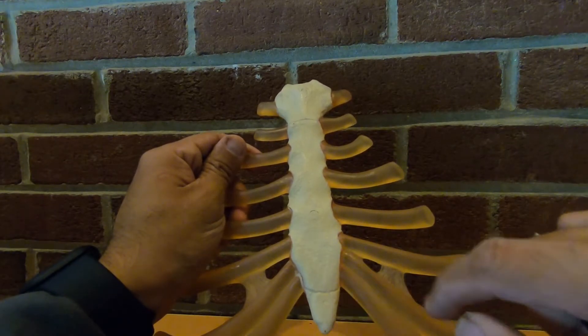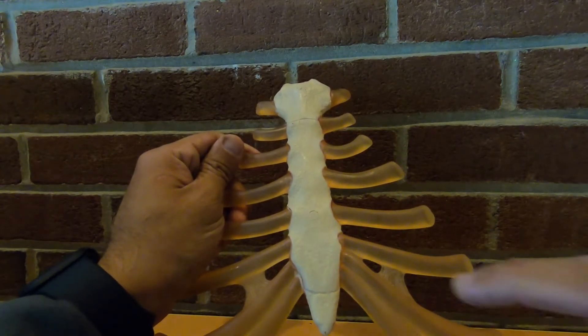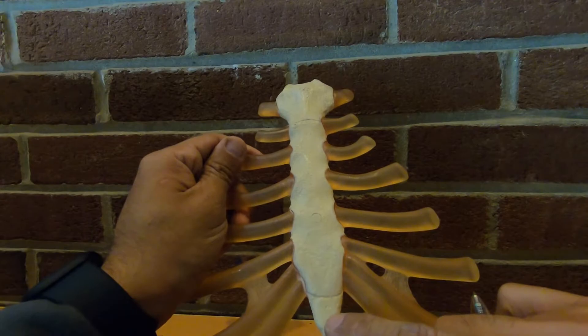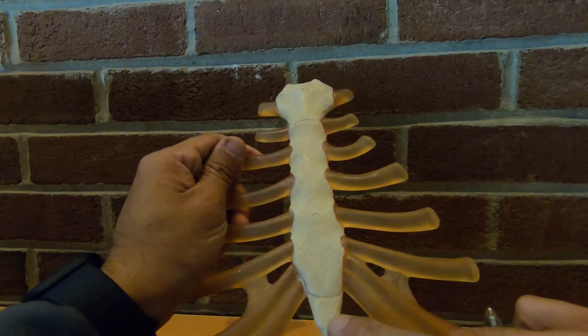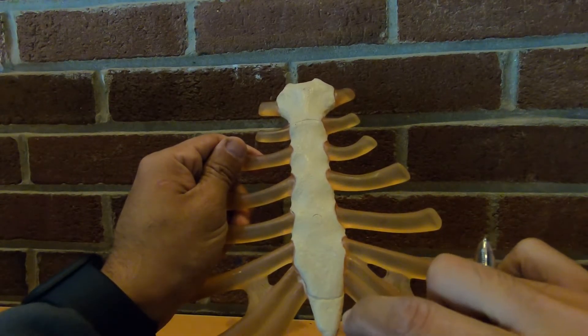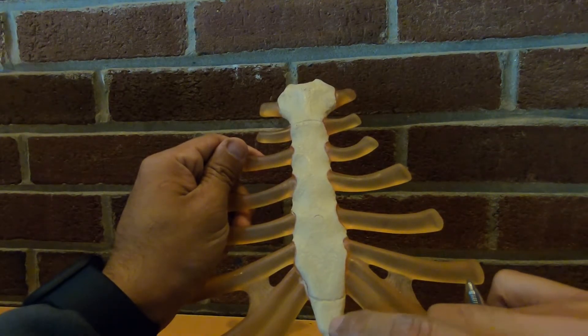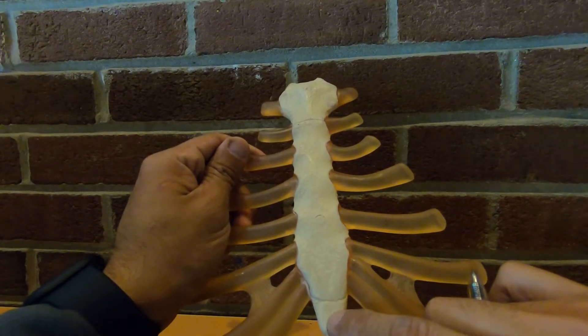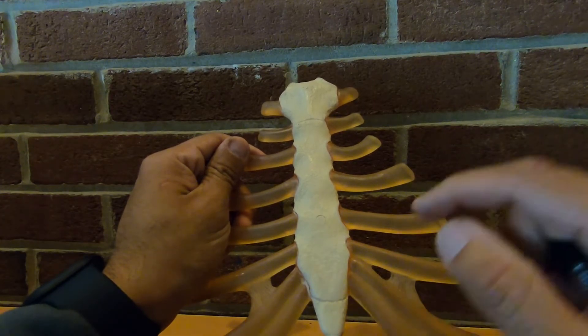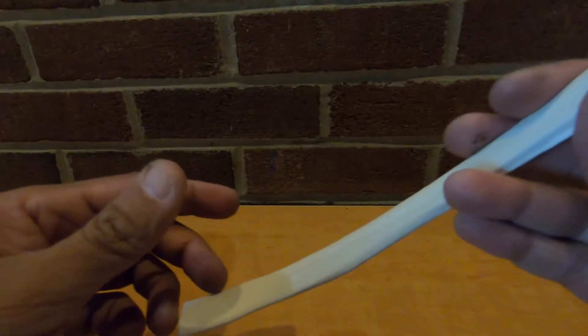The xiphoid process actually becomes ossified as you get older. This area is pretty prone to being fractured, so you'd be very careful over here.